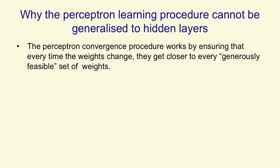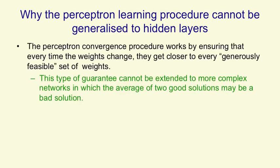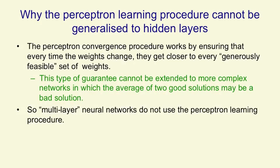The perceptron convergence procedure works by ensuring that when we change the weights, we get closer to a good set of weights. That type of guarantee cannot be extended to more complex networks, because in more complex networks, when you average two good sets of weights, you might get a bad set of weights. So for multilayer neural networks, we don't use the perceptron learning procedure.